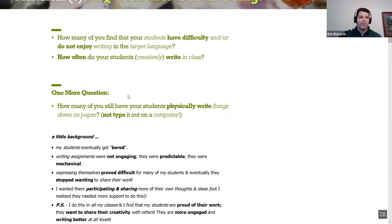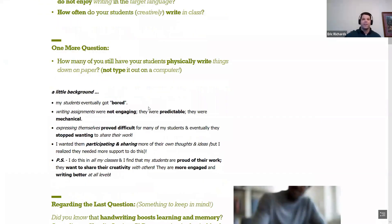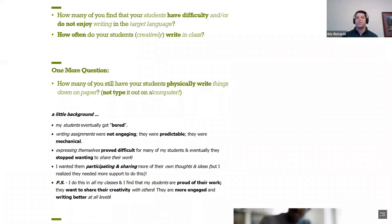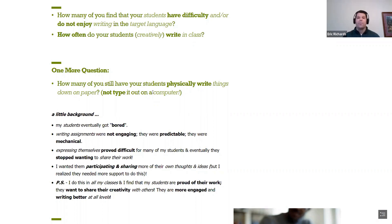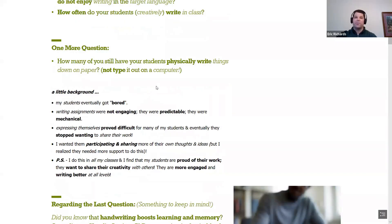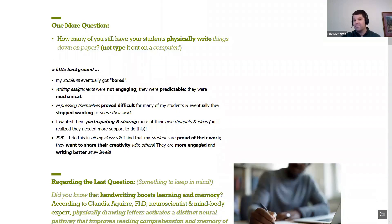Here's why I'm asking these questions: my students were having difficulty in class, they were bored, much of what we were doing was not engaging — it was very predictable and mechanical. Expressing themselves proved difficult in writing and they didn't want to share. My goal was to get them participating, sharing, and writing better. A lot of this was born out of experimentation in the classroom. When we get to the activities, I do these with all my classes and my students really engage — they're proud of their work and want to share their creativity.